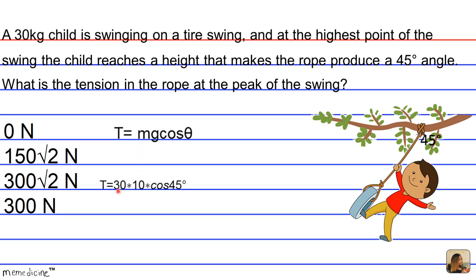So therefore the tension represented by T equals 30 kilograms times 10, 10 being the approximation for gravity 10 meters per second squared, although it's really 9.8 meters per second squared times the cosine of theta and theta here is 45 degrees. This simplifies to 300 times the cosine of 1 over radical 2.